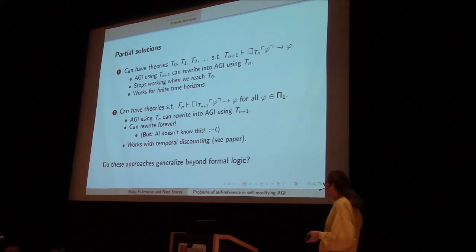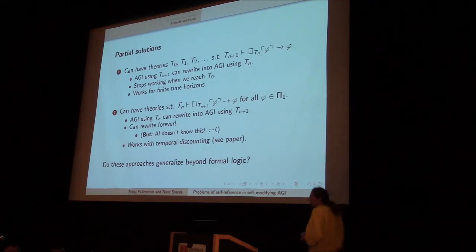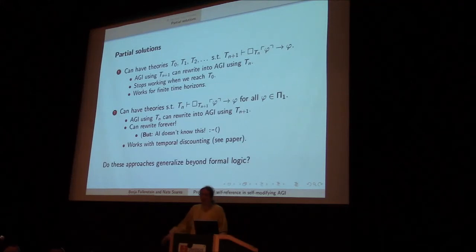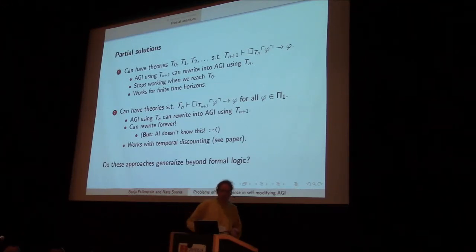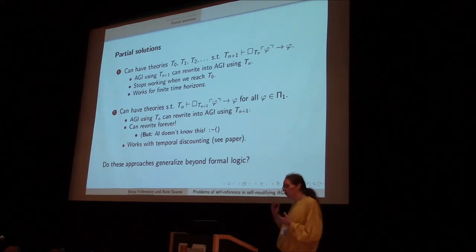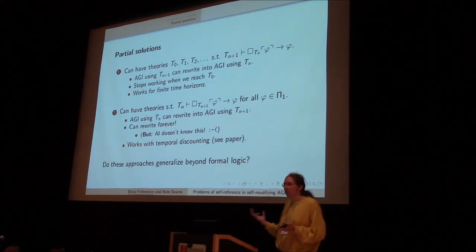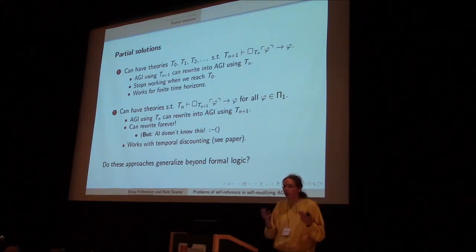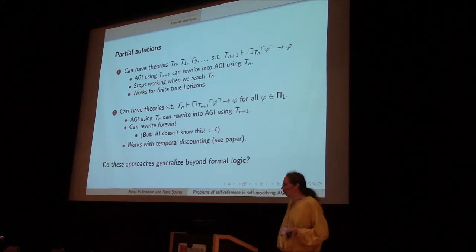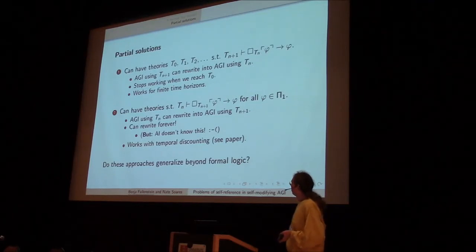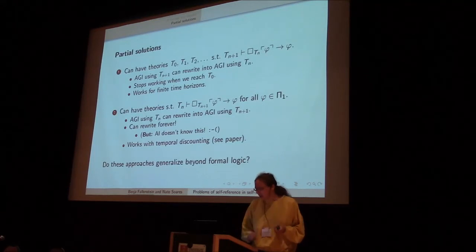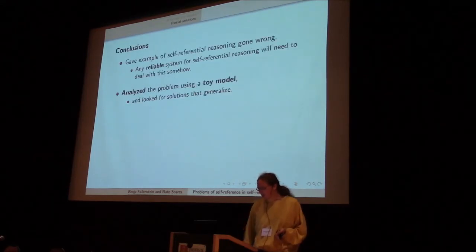I don't really have any big conclusions here, but I think that this suggests that these kinds of—you need to do work to figure out how can you avoid these sorts of problems. You need to actually make sure that your highly reliable thing avoids those problems. But you can do so, at least if you use finite time horizons or temporal discounting, and maybe this can teach us how to go beyond that.